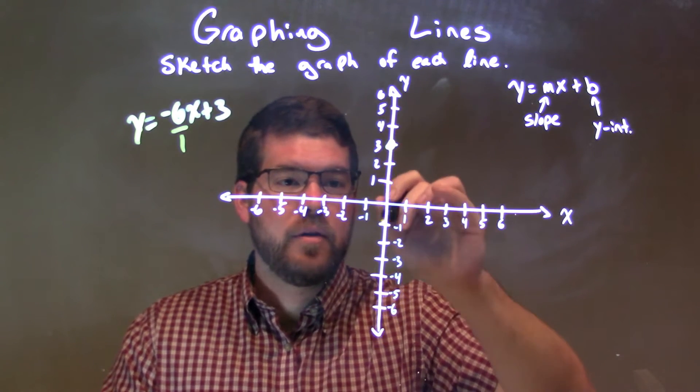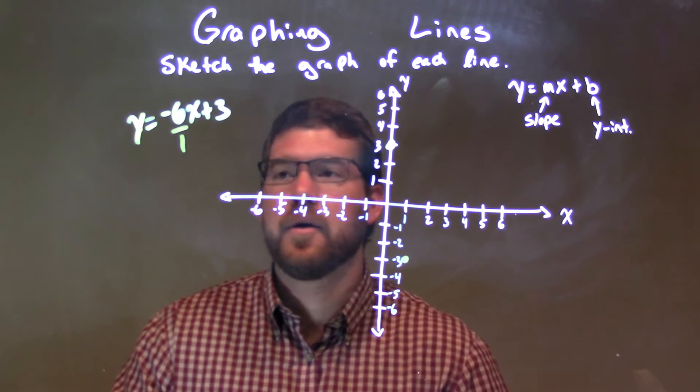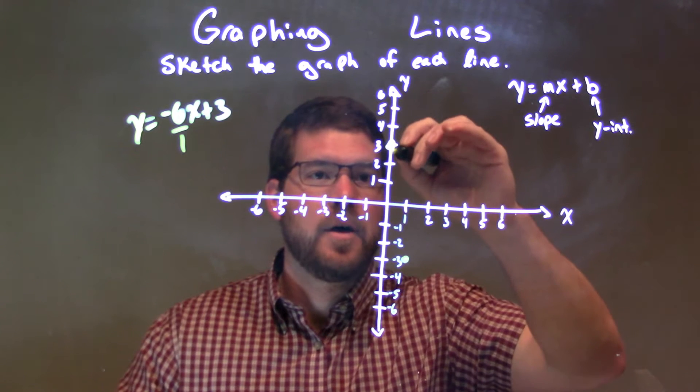1, 2, 3, 4, 5, 6 over 1 unit right there. And so now, we go down 6 over 1, we can connect these two lines.